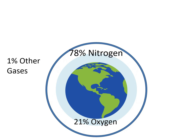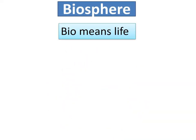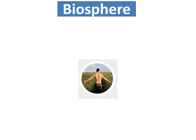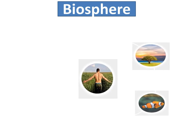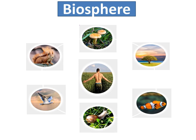And the last sphere is the biosphere. Bio means life. All the life forms that exist on Earth are part of this. We have humans, types of trees, different kinds of fish, birds, animals, fungi, and other living organisms that exist on Earth. These are the examples of the biosphere.